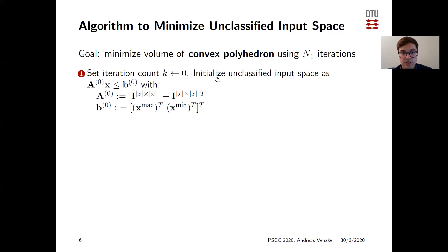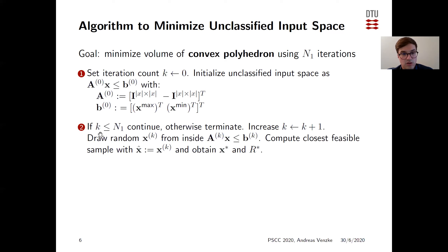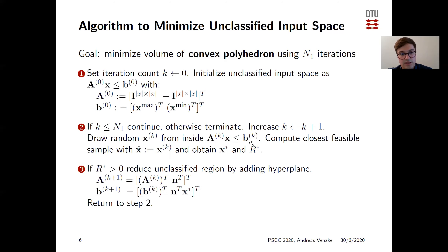We start by initializing the unclassified input space as A0·x ≤ B0, where matrix A contains the identity and vector B collects the minimum and maximum bounds on the control variables. Then, as long as we haven't reached the upper number of iterations, we draw a random sample from inside the convex polyhedron and compute the closest feasible operating point. If the distance is larger than zero — meaning the drawn point is not feasible to the convex relaxation — we reduce the unclassified region by adding a hyperplane, then repeat until reaching the iteration limit.